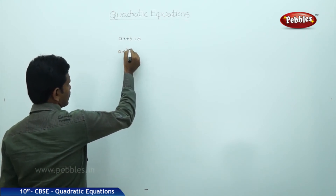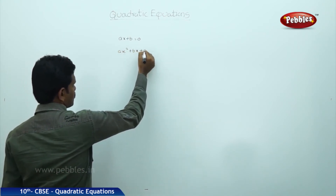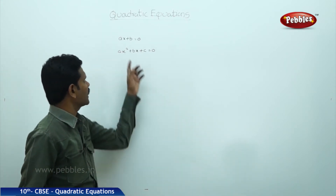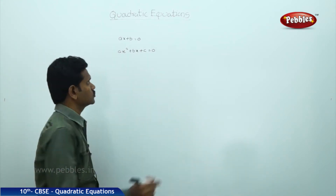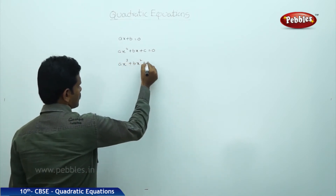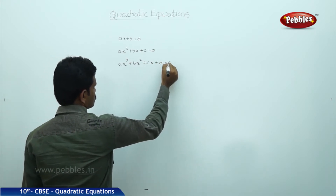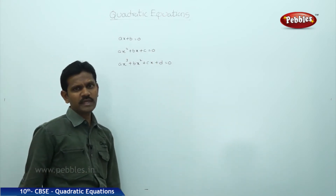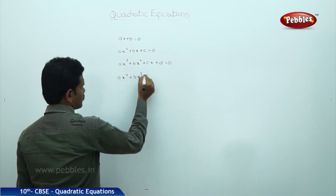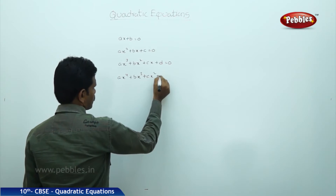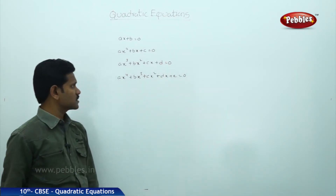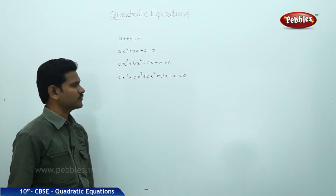Ax squared plus Bx plus C equal to 0 is a quadratic equation, because the highest degree of x is 2. Similarly, Ax cubed plus Bx squared plus Cx plus D equal to 0 is called a cubic equation. And Ax to the power 4 plus Bx cubed plus Cx squared plus Dx plus E equal to 0 is a bi-quadratic equation of degree 4.